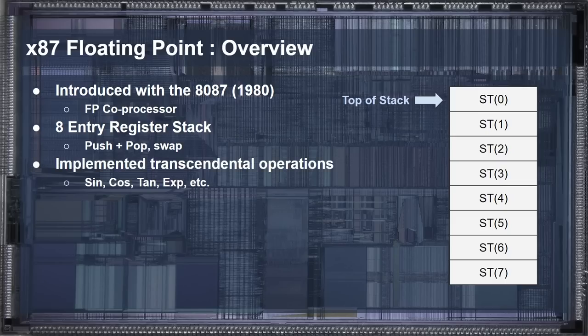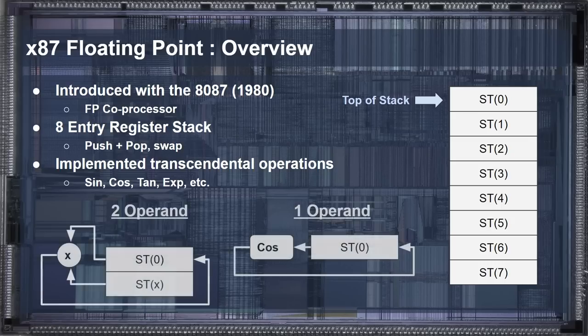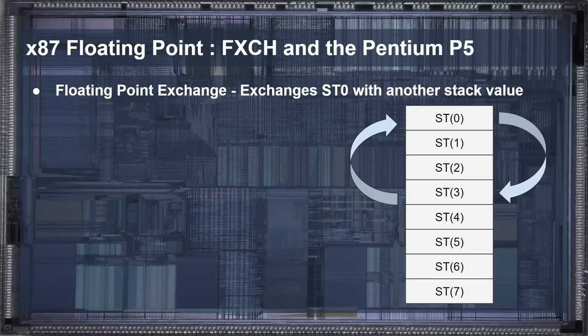On top of the normal floating-point operations like add and multiply, x87 also implemented transcendental functions like sine, cosine, tangent, and exponent. This was done through series approximation by way of microcode in the 8087, but saved program space and instruction bandwidth, in addition to being substantially faster due to tighter coupling to the hardware. Since this extension is stack-based, all operations use the st0 entry along with another stack register specified by the instruction encoding, writing back to the st0 register. Similarly, transcendental operations use the st0 register and write back to st0. In both cases, the operations are destructive, often requiring excess stack duplication. To solve this problem, enter the floating-point exchange instruction.